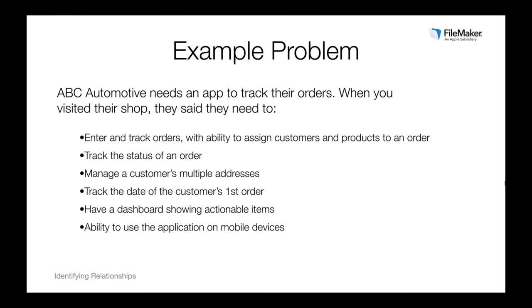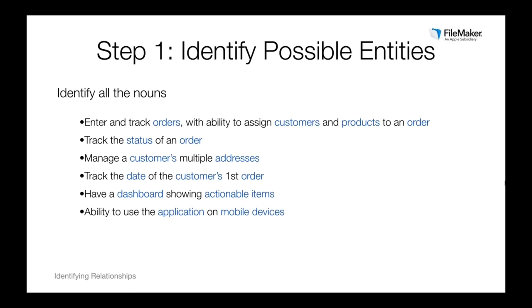Here's the list: I need to enter and track orders with the ability to assign customers and products to an order. I need to track the status of an order, manage multiple addresses for a customer, be able to track the date of a customer's first order, have a dashboard showing actionable items, and the ability to use an application on mobile devices. Once you have this list of requirements together, you need to determine your data model — identifying your entities, attributes, and relationships between them.